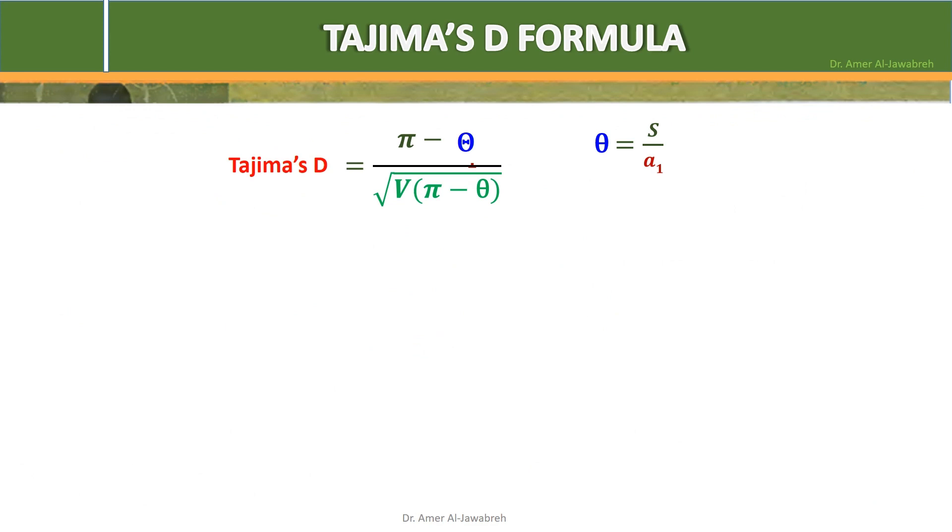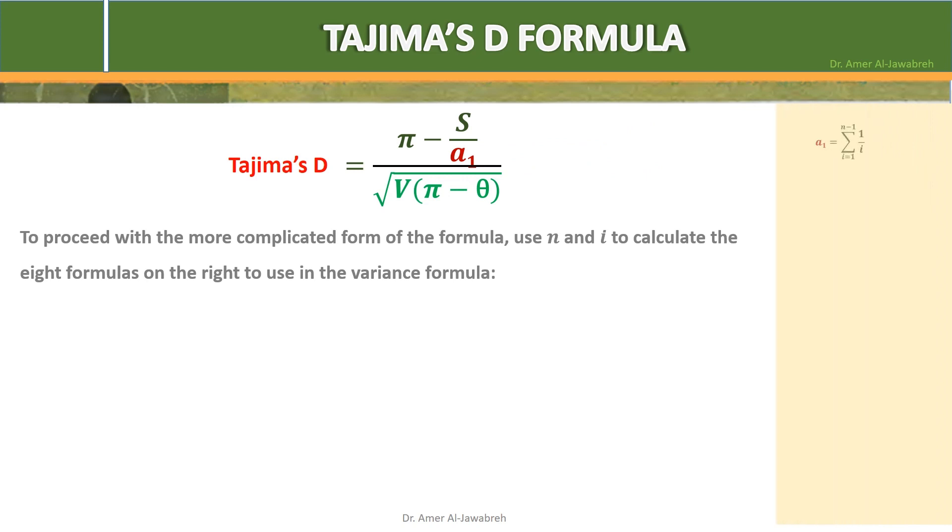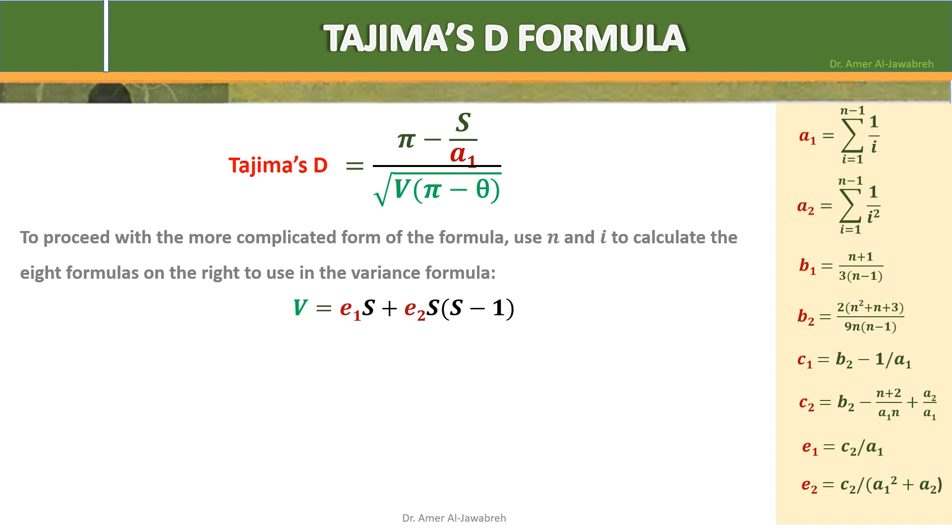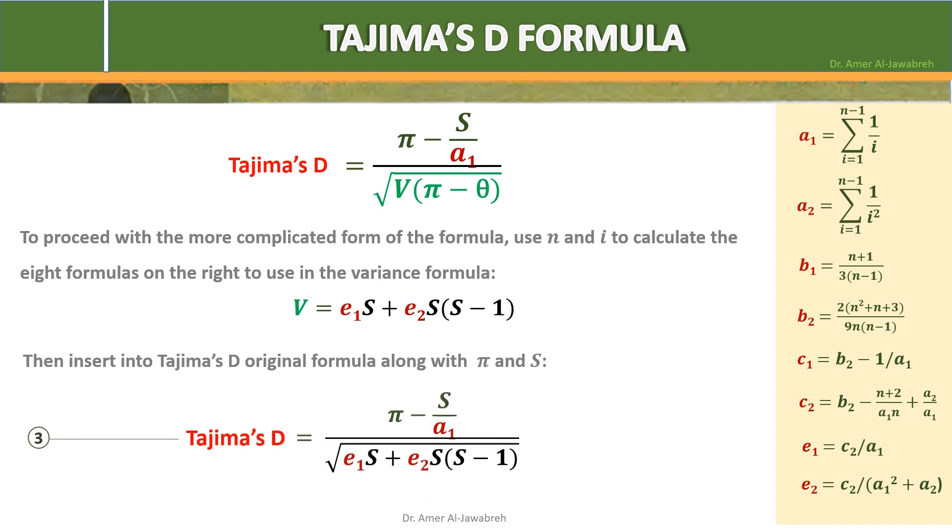Tajima's D equals pi minus theta over square root of variance pi minus theta, where theta equals S over A1. To proceed with the more complicated formula, use N and I to calculate the 8 formulas on the right to use in the variance formula: V equals E1S plus E2S times S-1. Then insert into the Tajima's D original formula along with pi and S to become: Tajima's D equals pi minus S over A1 over square root of E1S plus E2S times S-1, as the final version of Tajima's D formula.